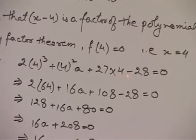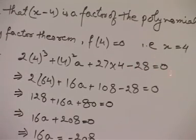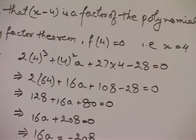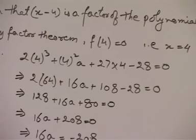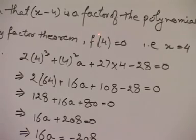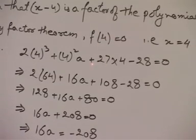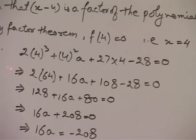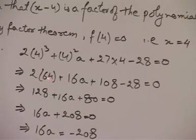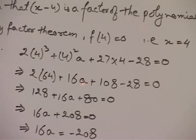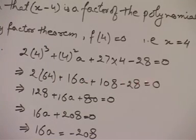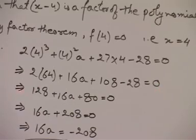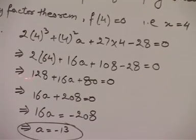You know how we got x = 4 here — okay. Solving this, you get 2 × 64 + 16a + 108 - 28 = 0, which gives 128 + 16a + 108 - 28 = 0.